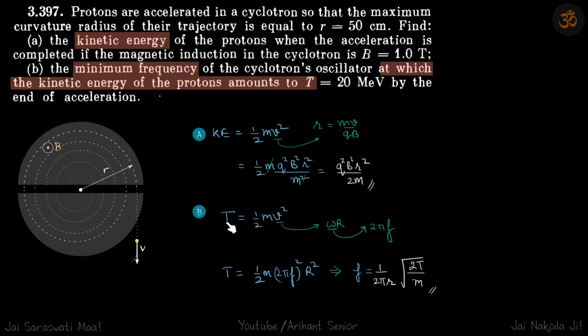So kinetic energy T is equal to half mv squared. So V, we can write as omega r and omega is again 2 pi f. So we replace V by 2 pi f r. We get this. From here, we get the frequency as 1 by 2 pi r root 2T by m, which is our answer.